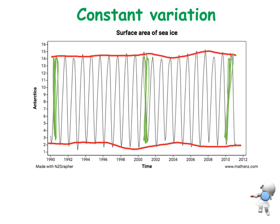So we can say we've got constant variation from 1990 to 2012 in the surface area of sea ice.